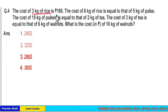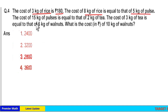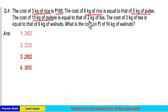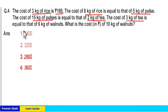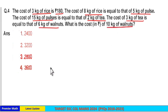Cost of 3 kilogram rice is Rs. 190. The cost of 8 kilogram rice is equal to that of 5 kilogram pulse. Cost of 15 kilogram pulse is equal to that of 2 kilogram tea. Cost of 3 kilogram tea is equal to that of 6 kilogram walnut. What is the cost of 10 kilogram walnut?